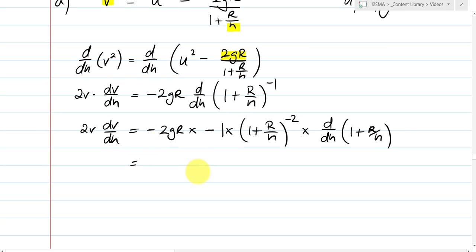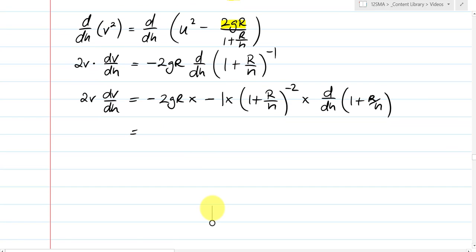Now just simplifying here on the right hand side. The negatives cancel out. I get 2gr, 1 plus r over h to the power of negative 2. And then deriving this, 1 disappears. ddh of 1 is 0. And then ddh of r over h becomes negative r over h squared. So we've gone through and developed that derivative.